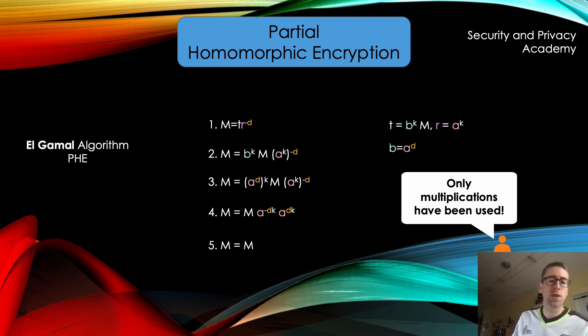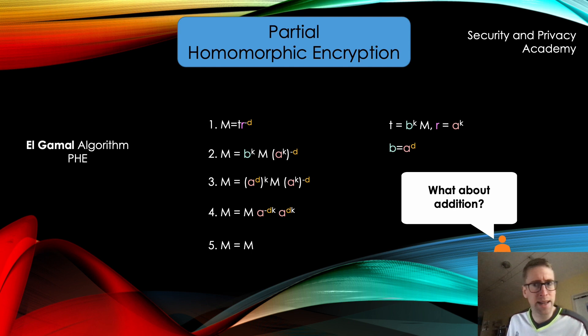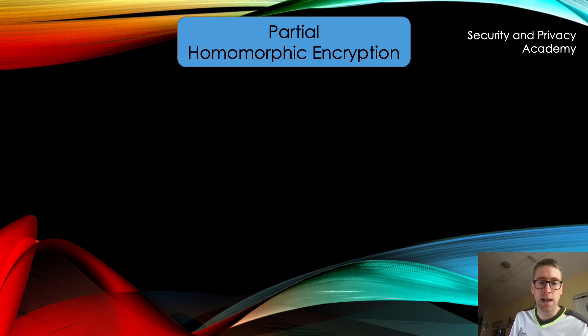Now you might ask, well, what about additions? What about adding things? I mean, multiplying is nice, but we need both. Well, that's why it's called partial homomorphic encryption, because we can't do both. El Gamal only covers multiplication and an addition of the encrypted message would break the homomorphism.